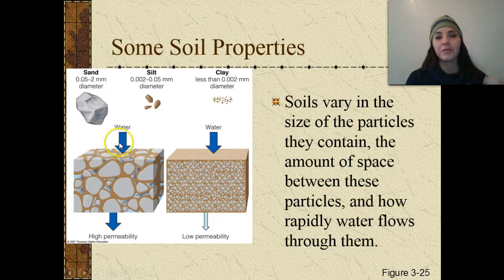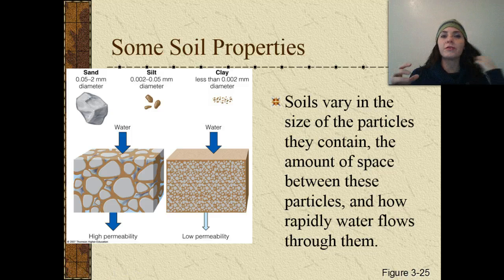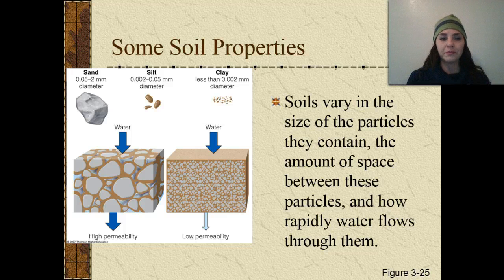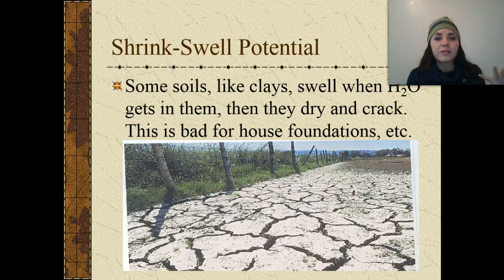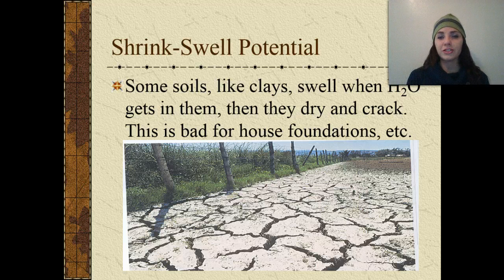Sand has large particles and is very porous and permeable. Clay is less porous and much less permeable because its tiny particles are packed very tightly. We also have shrink-swell potential, which occurs a lot in clay — when water is added, clay swells up and becomes slimy, but when it dries out, it shrinks and cracks. This is a very bad soil to build houses on because it can drastically affect a building's foundation.